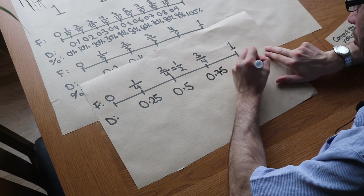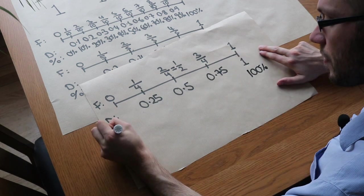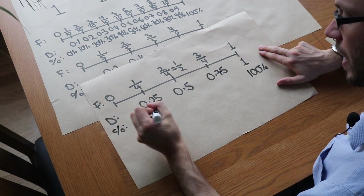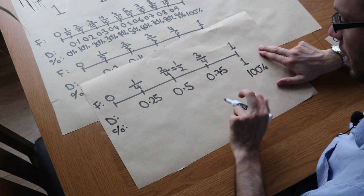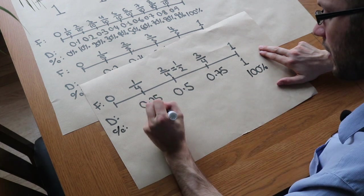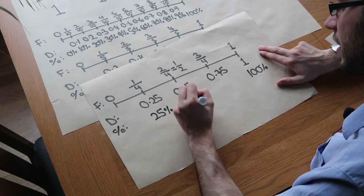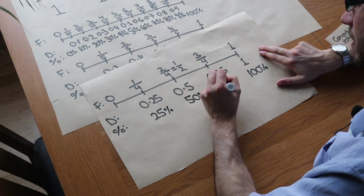And then as percentages, this is 100%. That's 0%. And then, well, what's a quarter of 100? It's 25. So it's 25%, 50%, and 75%.